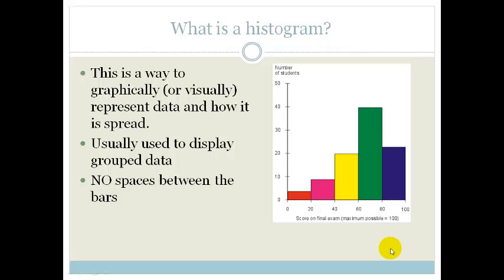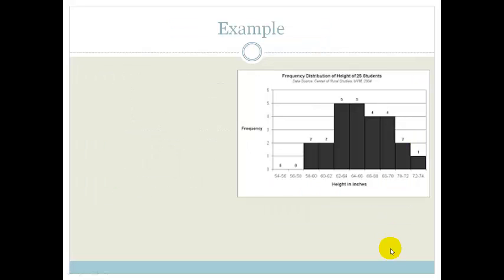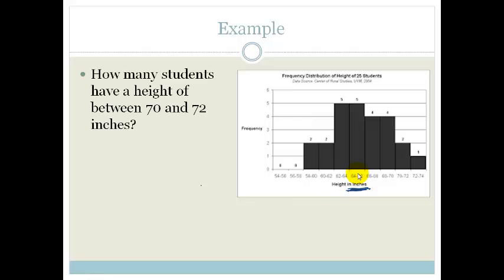Right, so let's look at how we would read off a histogram. This one here is the frequency distribution of the height of 25 students. You can see on the y-axis you've got the frequency, and on the right-hand side here is the height in inches. That's the UK way or the American way of measuring height. So, the first question would be, how many students have a height of between 70 and 72 inches?